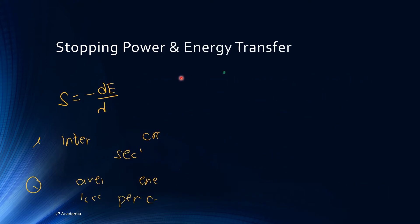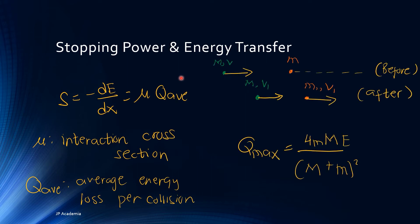We have other expressions for the stopping power and the maximum energy transfer. The stopping power S can also be defined in terms of the interaction cross-section mu, which is just the probability that a collision occurs per unit distance, and Q, which is the average energy loss per collision. We can define the maximum energy transfer after a collision interaction, which is equal to 4mME over (M + m) squared.